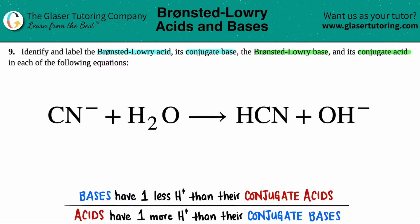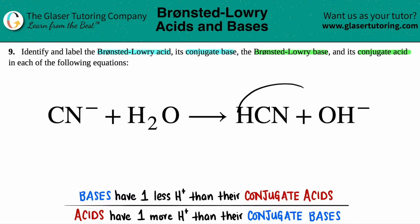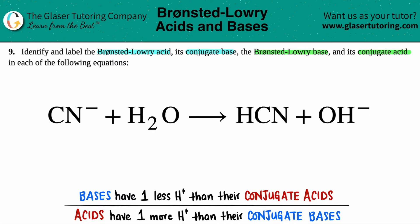The Bronsted-Lowry acid and base, and then the conjugate acid and the conjugate base. The first and easiest thing to do in situations like this is to find the pairs — one species on the left side hooks up with one species on the right. Just find the ones that look very similar, kind of like when we had to do half reactions balancing equations in acidic and basic solution.